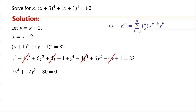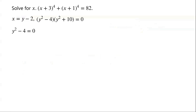Dividing the equation by 2 gives Y⁴ plus 6Y² minus 40 equals 0. The left side can be factorized as (Y² minus 4) times (Y² plus 10). So either Y² minus 4 equals 0, or Y² plus 10 equals 0.